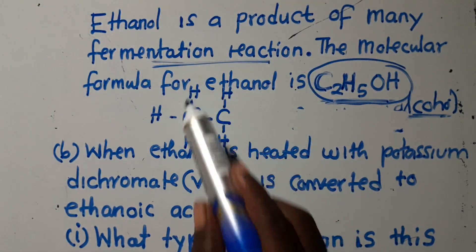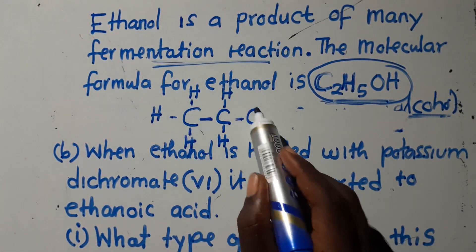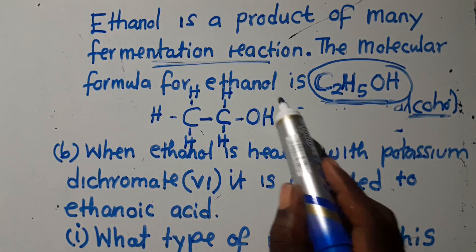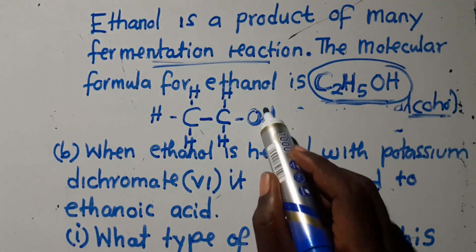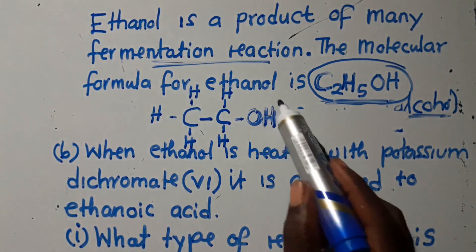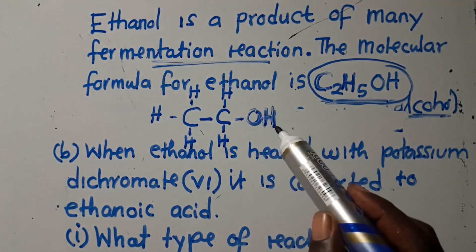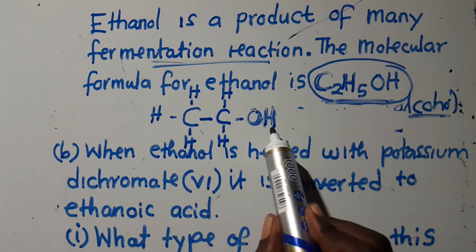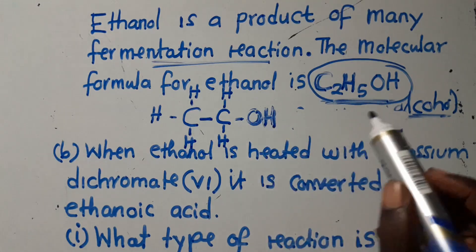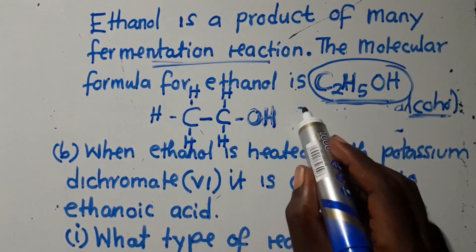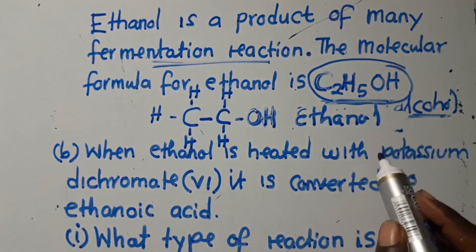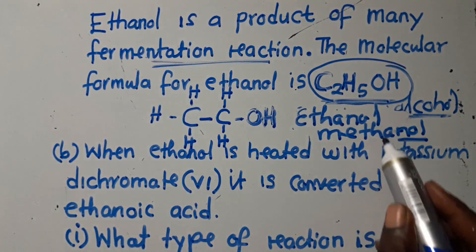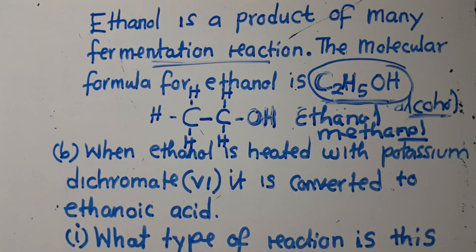Counting the hydrogens: one, two, three, four, five — there are five. Then here you add OH, because this is the functional group for alcohol. Every alcohol has got this hydroxyl group (OH). The moment you notice there is a hydroxyl group (OH), just know you're talking about an alcohol. You can also identify alcohols by their names ending in '-ol', like ethanol and methanol.